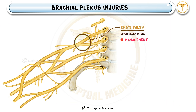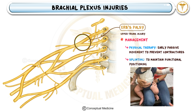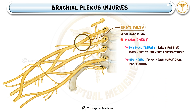The good news is that most cases improve with conservative treatment. Early physical therapy is essential to prevent muscle contractures and maintain range of motion. Splinting may be used to support the limb in a functional position. In severe cases where nerve damage is extensive and recovery is slow, surgical intervention such as nerve grafting or nerve transfer may be required.